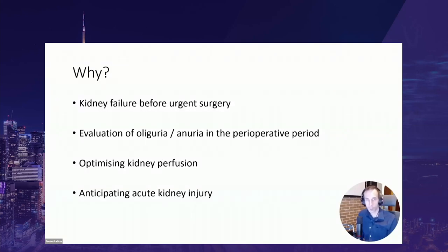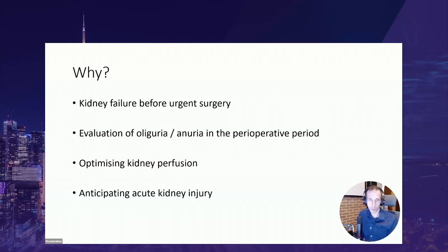Why would you want to perform renal ultrasound in the perioperative setting? First, if it's an urgent surgery and the patient has kidney failure, you may want to do a differential diagnosis before the surgery starts. In the perioperative setting, the patient may develop oliguria and anuria, requiring differential diagnosis at the bedside. There is also the opportunity to optimize kidney perfusion and anticipate acute kidney injury in the postoperative period.